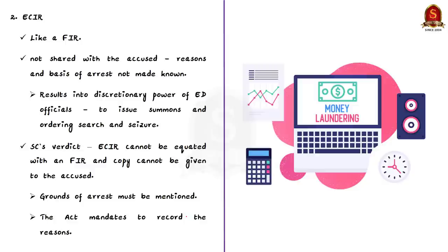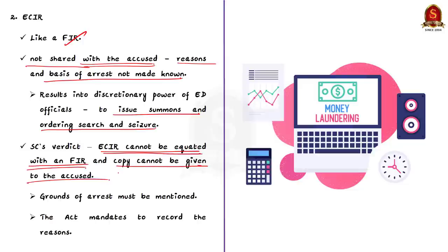Let us come to the second challenge. It is regarding the ECIR and the summons under the Act. ECIR is argued to be like first information report FIR. But here, ECIR is not shared with the accused person. So the person is unaware about the reasons and the basis of their arrest. The petitioners argued that the procedure is not transparent. So why and how a money laundering probe is initiated remains unknown. Thus the ED officials had discretionary powers to issue summons and can order search and seizure based on ECIR. The accused person is left in the dark regarding their arrest. But again, Supreme Court rejected these claims stating they are necessary and it held that ECIR cannot be equated with an FIR, so its copy cannot be given to the accused.